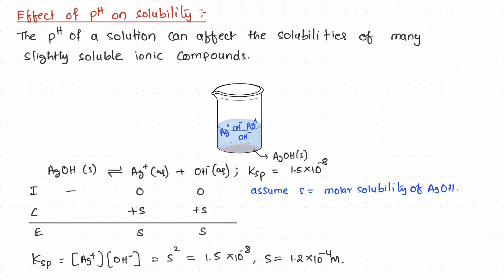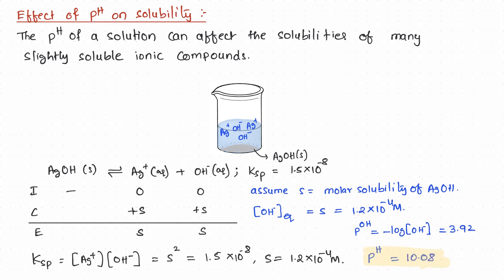The hydroxide ion concentration in the saturated solution of silver hydroxide is 1.2 times 10 to the negative 4 molar. If we calculate the pOH of this solution, it comes out to be 3.92, and the pH is 14 minus pOH, which comes out to be 10.08.